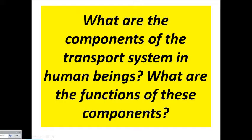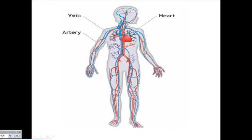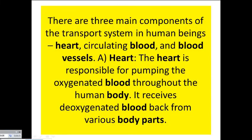The components of the transport system in human beings are: heart, blood vessels, arteries, and veins. These are the main components of the transport system in human beings.